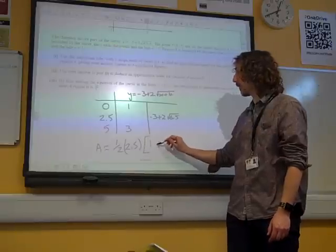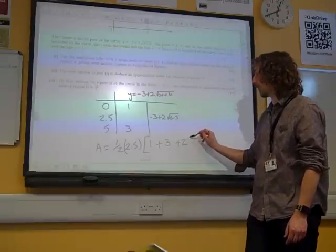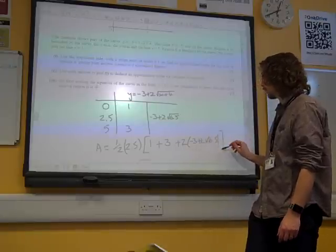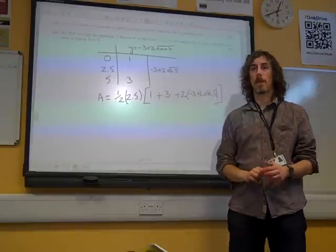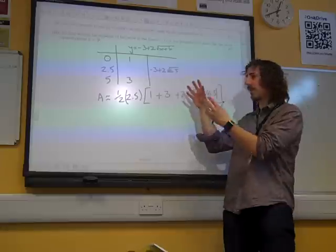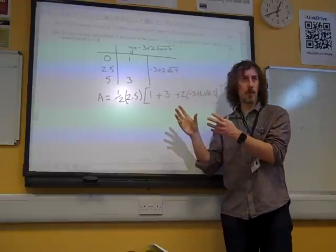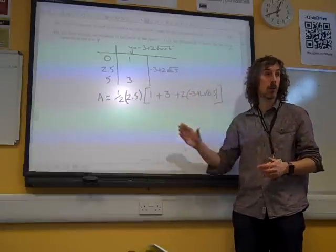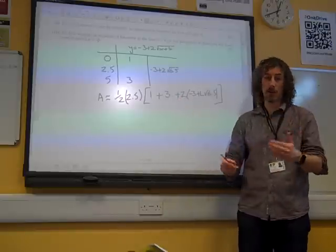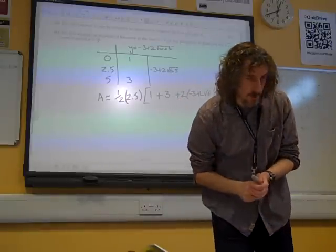The first plus the last plus twice the middle values, at which point we take our trusty calculator. I know some of you do things in separate stages and use the answer button, but I would write the whole thing in one go, then you can check what's on your calculator screen, and we get 10.2.